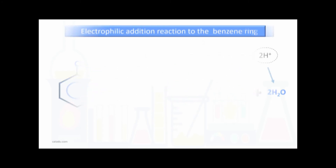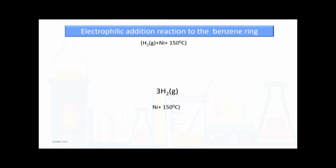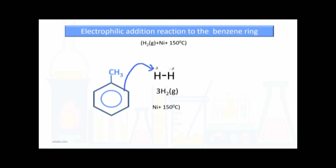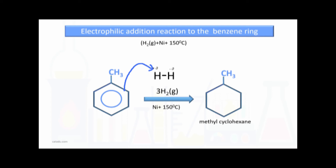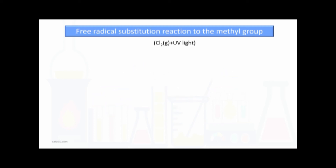The electrophilic addition reaction at the benzene ring: the reagent is hydrogen gas and nickel is the catalyst at 150°C. The pi electrons form two temporary H⁺ and H⁻ species, and hydrogen atoms are added to the double bonds. Two hydrogen atoms are added per bond, and six hydrogen atoms in total are added across the three bonds, giving the final product methylcyclohexane, which has no double bonds and is not aromatic.